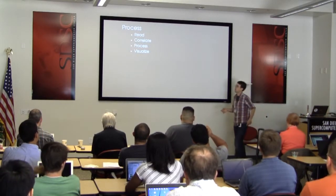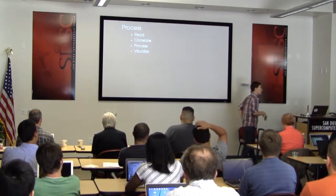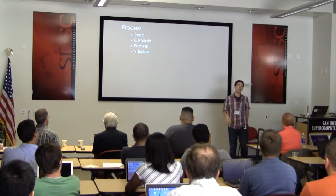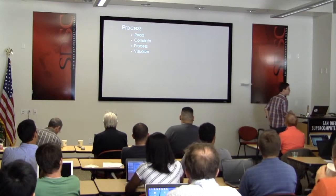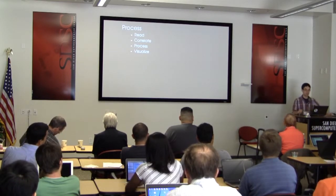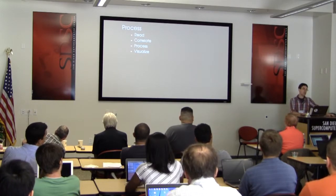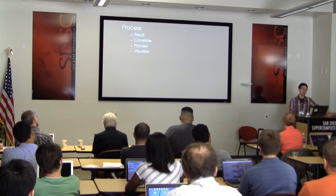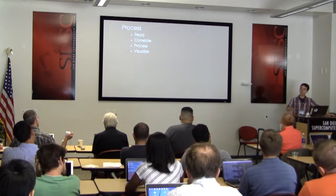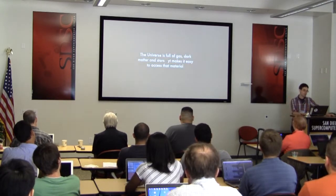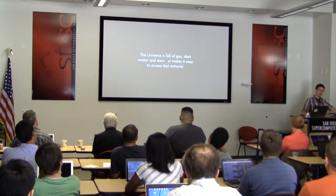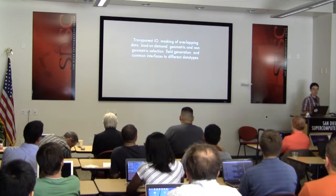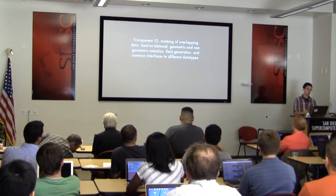YT undergoes the process of reading in data from disk, correlating it with other data, applying some process to it, and then visualizing it. For example, if you were looking for halos in a cosmological simulation, it would read the particles from disk, correlate the spatial locations across grids, filaments, and clusters, then identify the halos, and return either a quantitative visualization like a reduced data table, a 3D visualization, or a 2D visualization with halos plotted. The universe is full of gas, dark matter, and stars, and we try to make it easy to access that material. This includes I/O, masking of overlapping data, loading data on demand, geometric and non-geometric selection, field generation, and common interfaces to different data types.